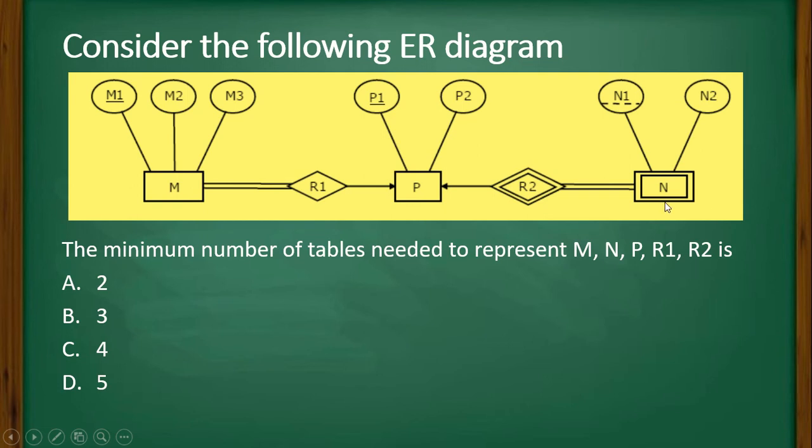So as this is a weak entity and the relations are there, that is between M and P, there is a many to one relation and here it is M to R1 relation. Here it is a total participation and R1 to P is a partial participation.